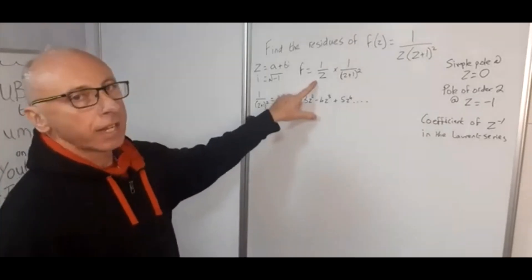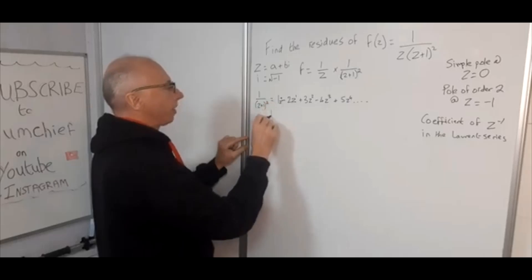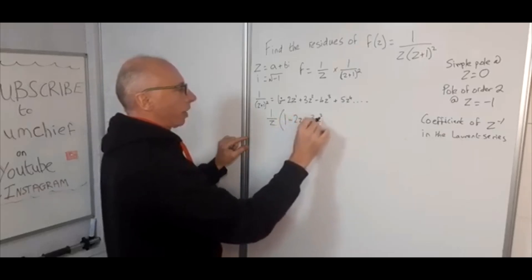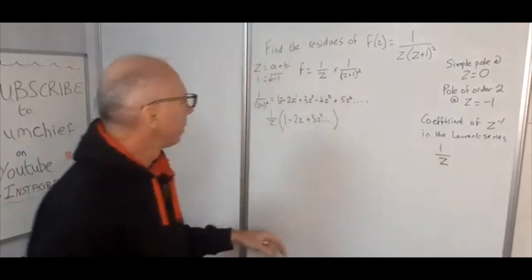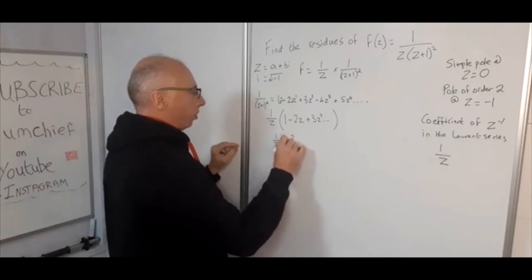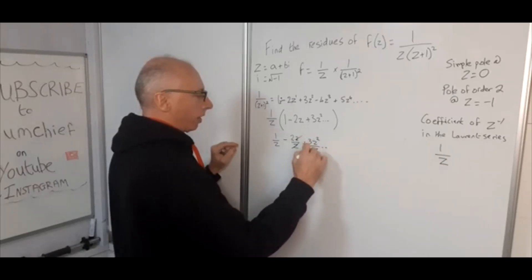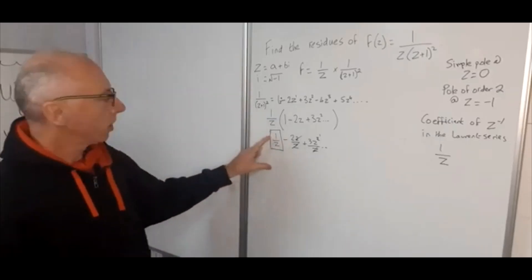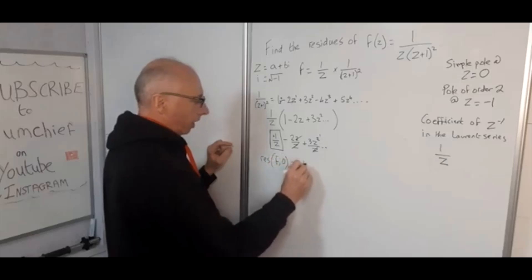Now we want to find the residue at z = 0. We multiply 1/z by the Taylor series of 1/(z+1)², giving (1/z)(1 - 2z + 3z² + ...). We're looking for the coefficient of z to the minus 1. Distributing gives 1/z - 2 + 3z and so on. So the coefficient of 1/z is positive 1, meaning the residue of f at z = 0 equals +1.